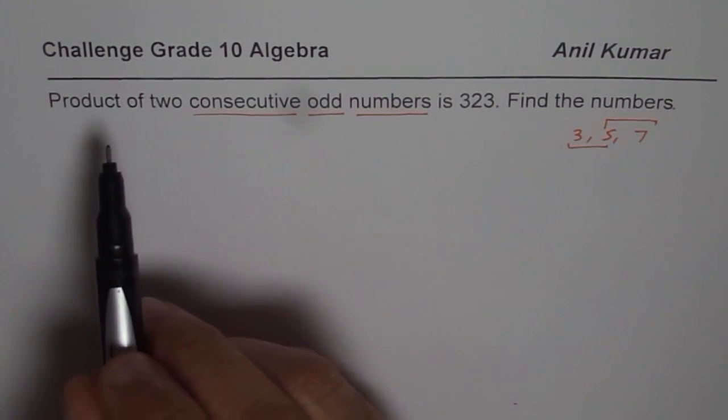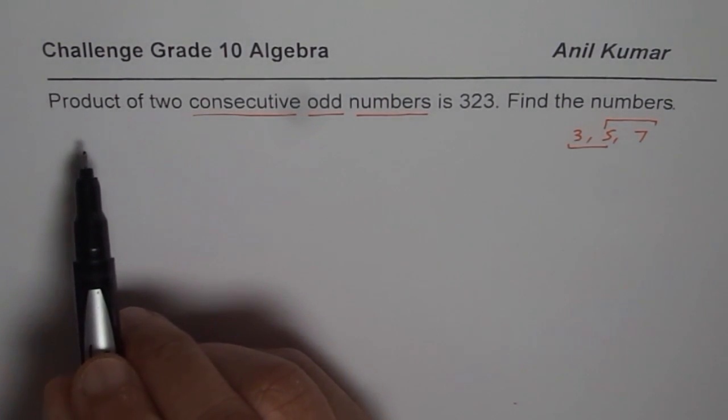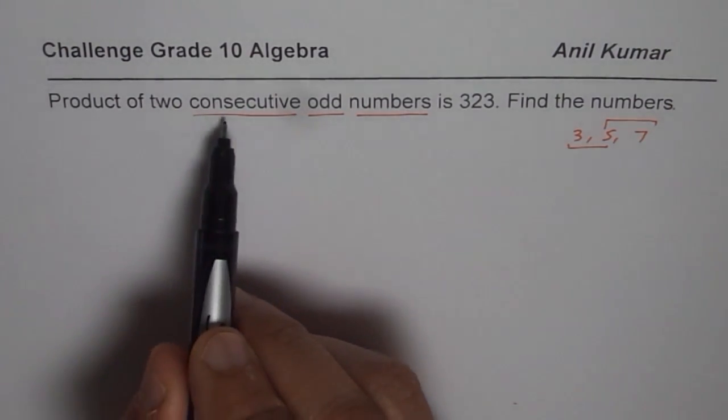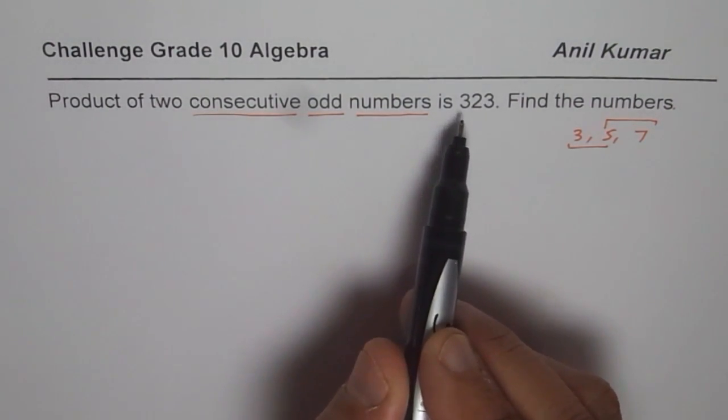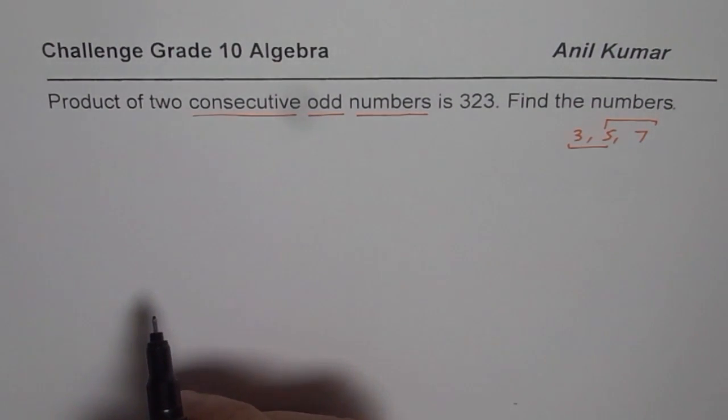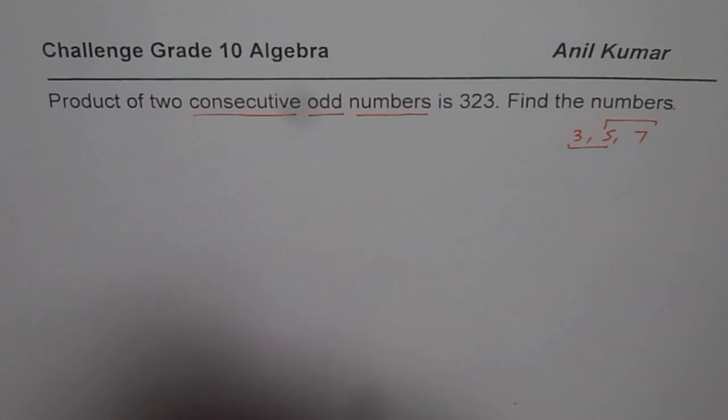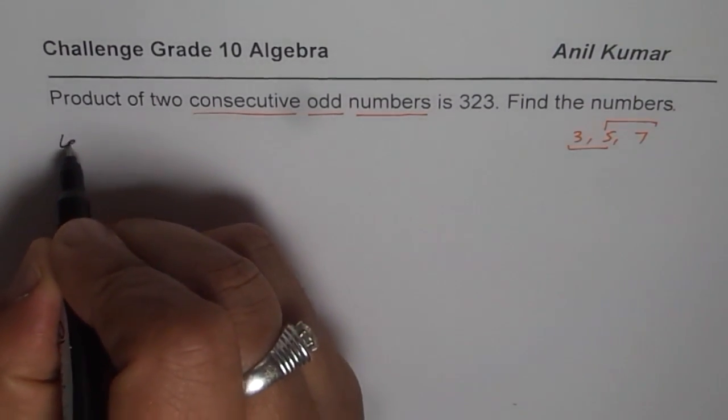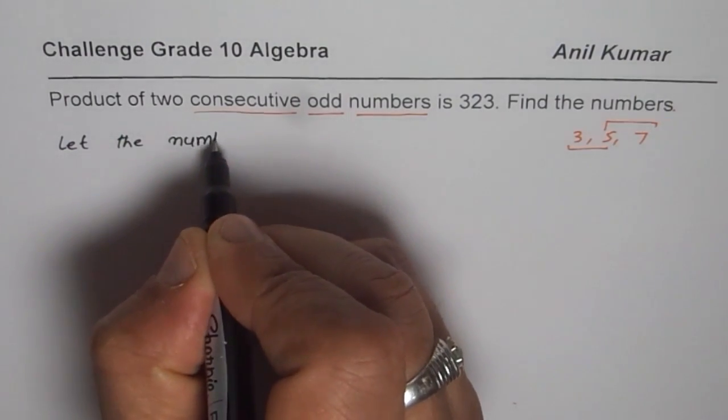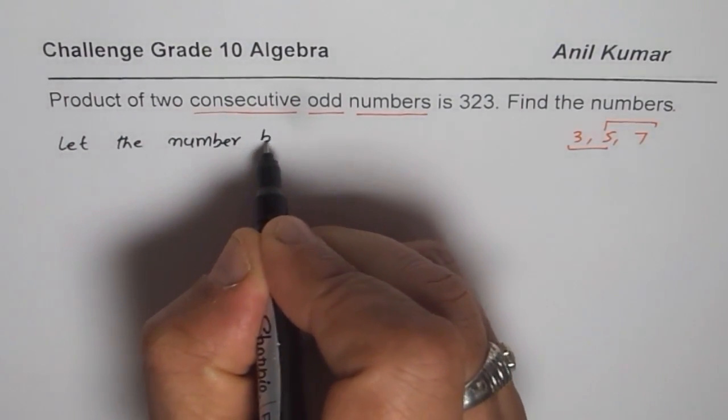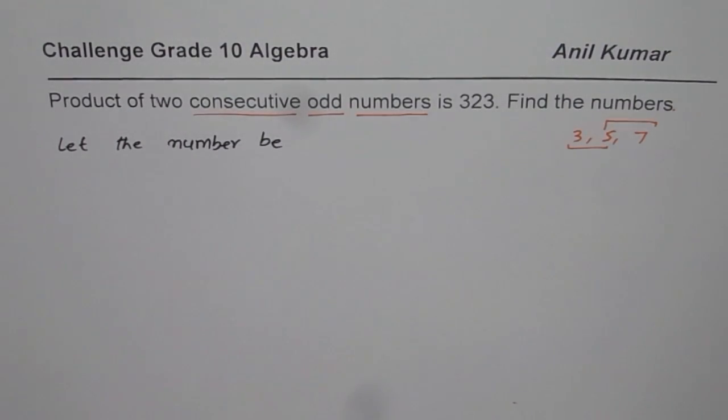Now we have to write the equation for product of two consecutive odd numbers and that should be equal to 323. How should we define a variable? That is the foremost question. Let us say let the numbers be. Now what could be the numbers? So let us explore a bit so that you can appreciate why I selected what I selected.